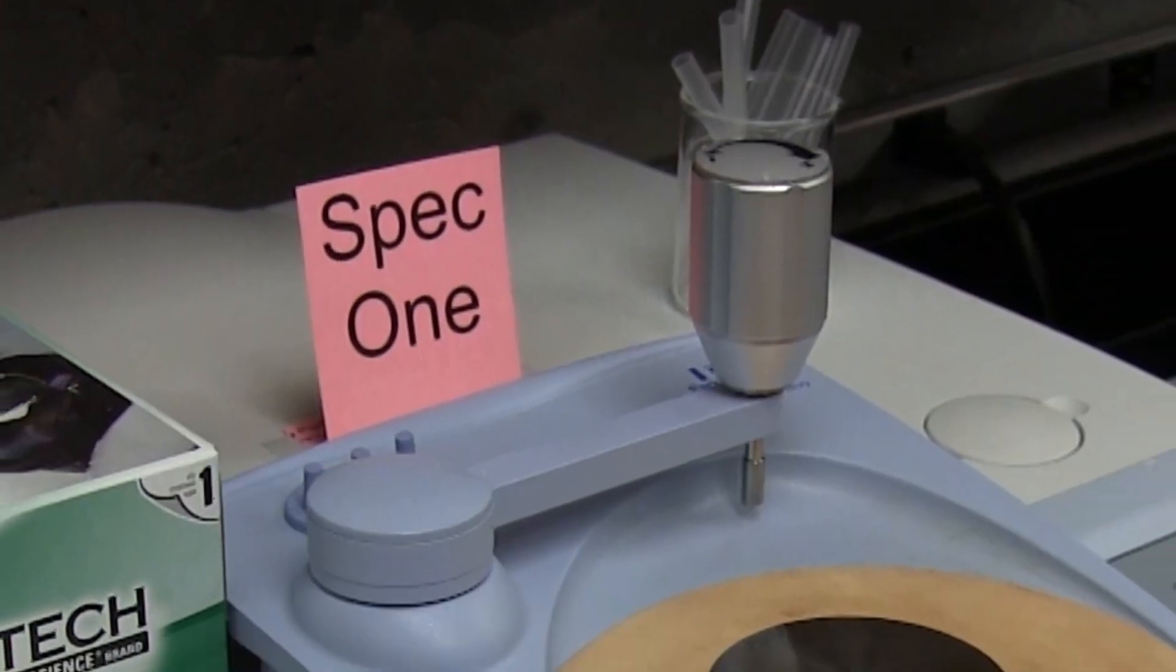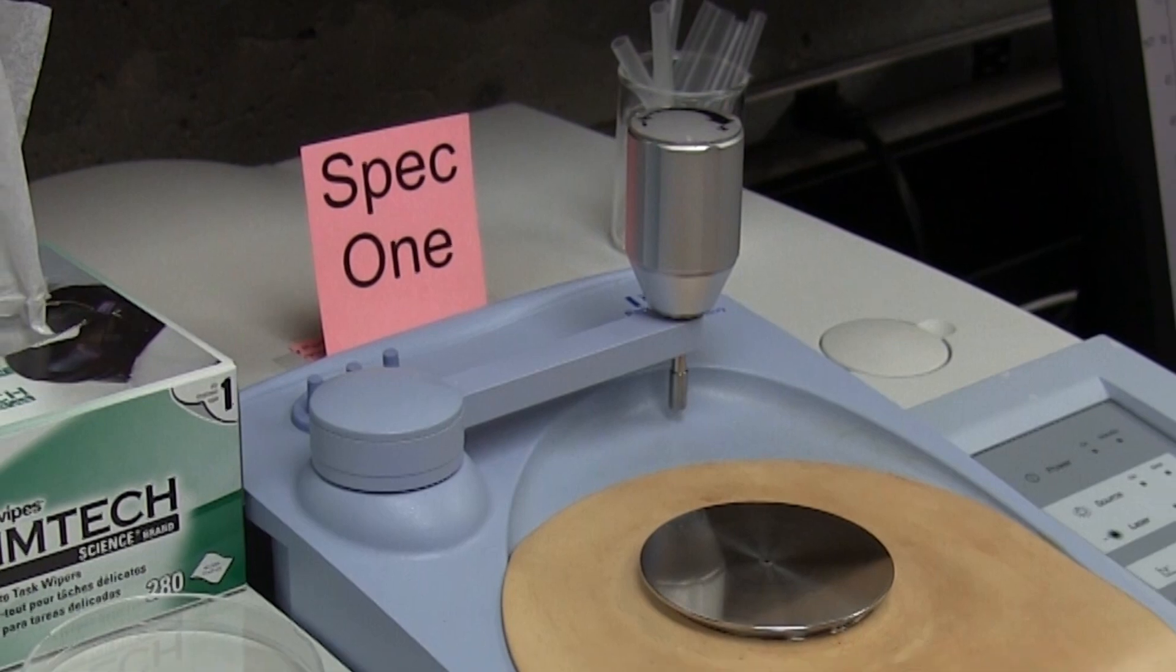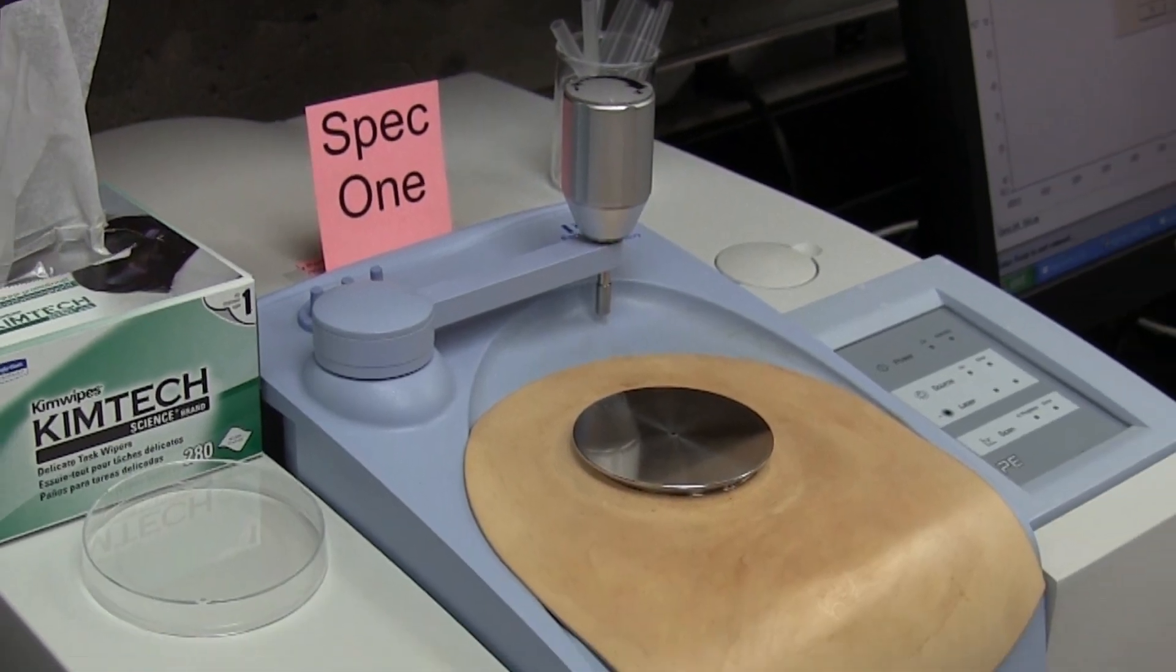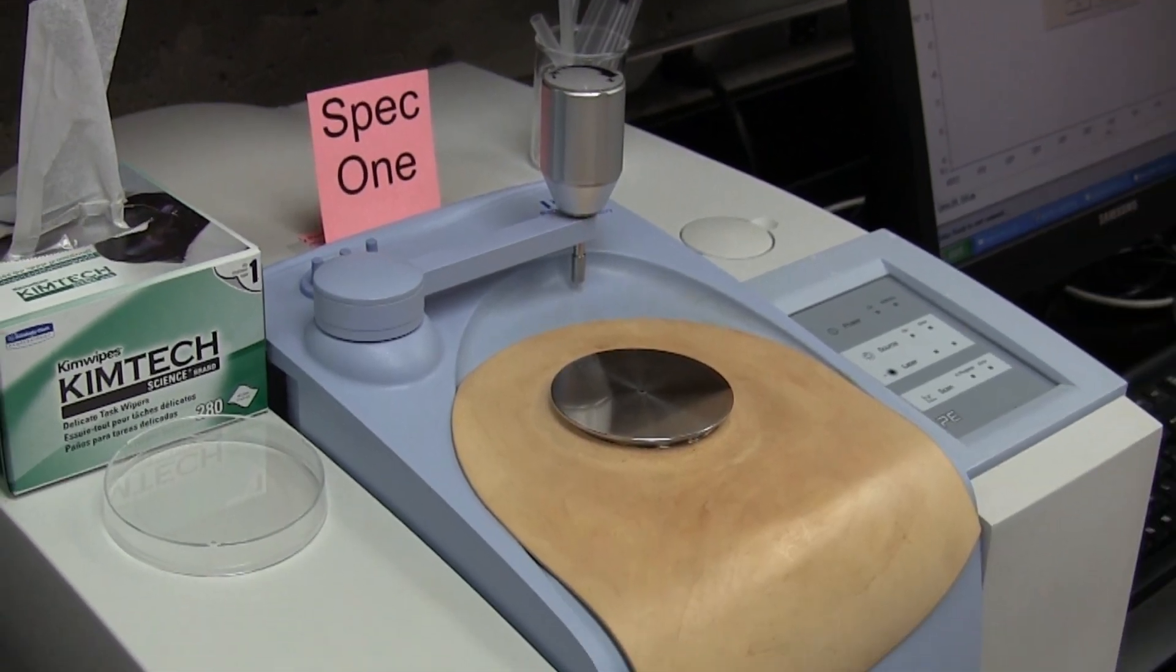SPEC 1 is equipped with an ATR module. ATR meaning attenuated total reflectance. The ATR is used to obtain spectra of liquid and solid samples, and you can refer to your lab manual for more information on the ATR.